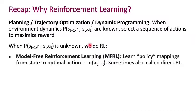In model-free reinforcement learning, you could learn policy mappings from state to optimal action. And you can also do this slightly indirectly by learning a Q function, and then using that to determine the policy.